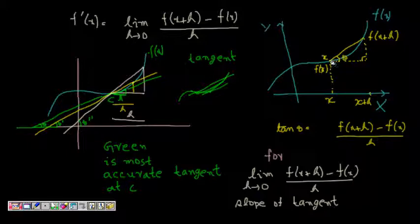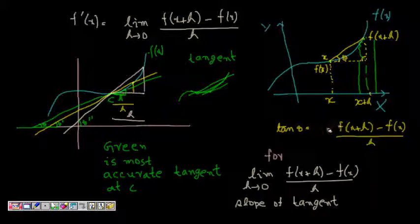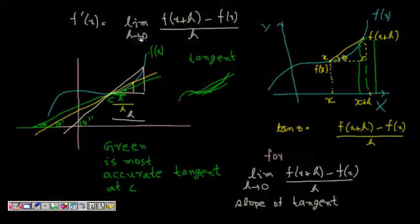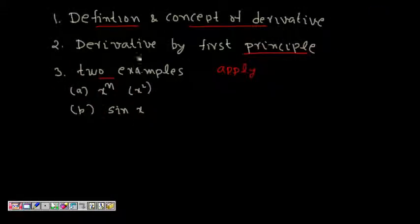So if we take a point x and a nearby point x + h, then tan θ = height / base = [f(x+h) - f(x)] / h. As h tends to zero, this becomes the slope of the tangent. So the derivative by first principle is: f'(x) = lim[h→0] [f(x+h) - f(x)] / h. This is finding the derivative by first principle, as promised.